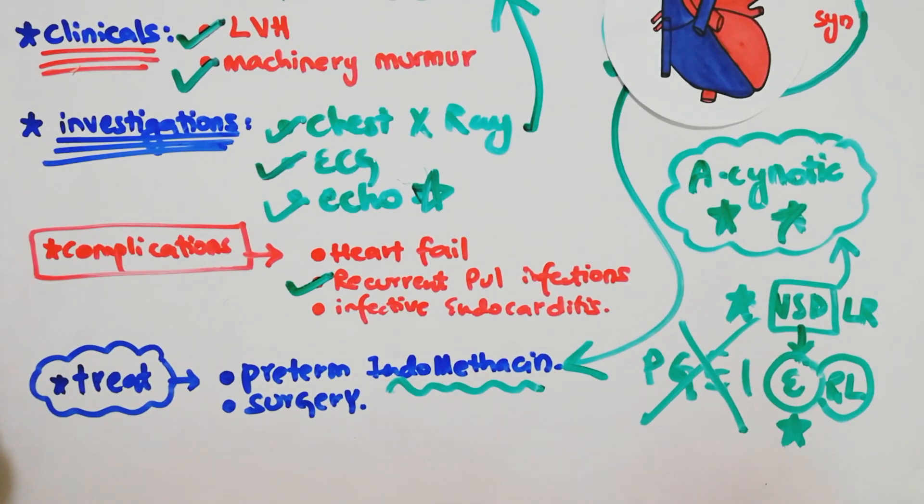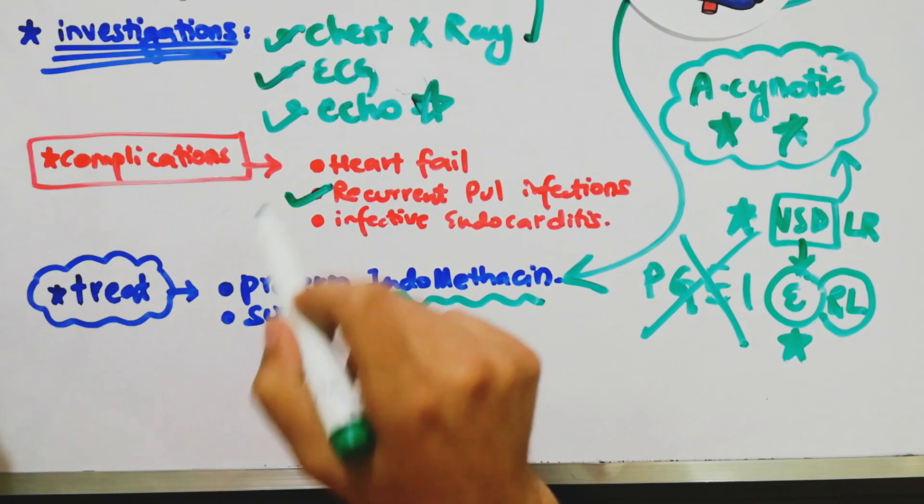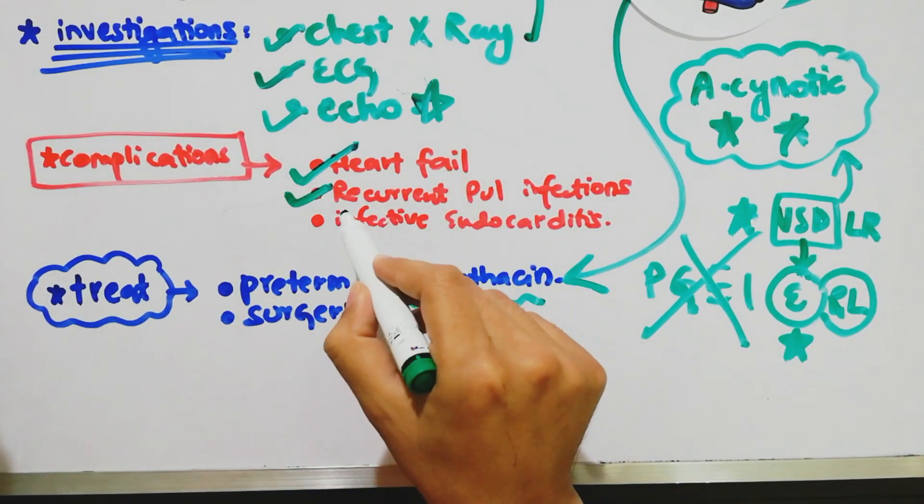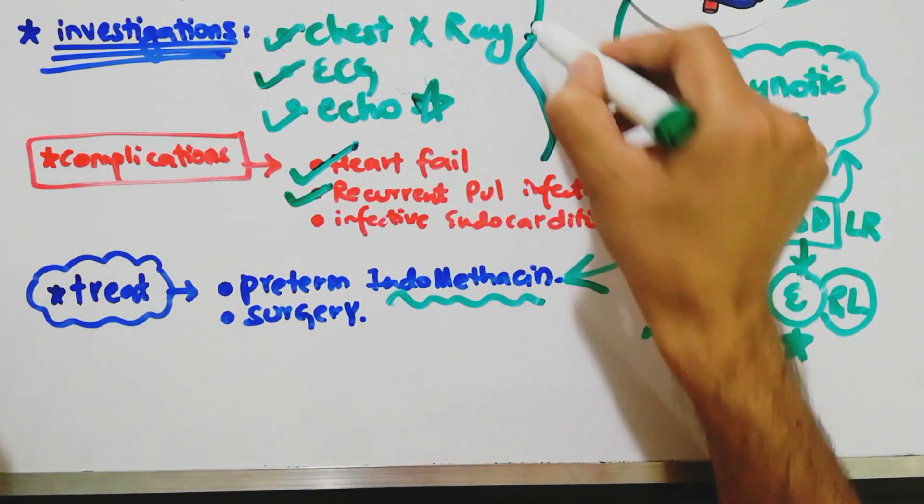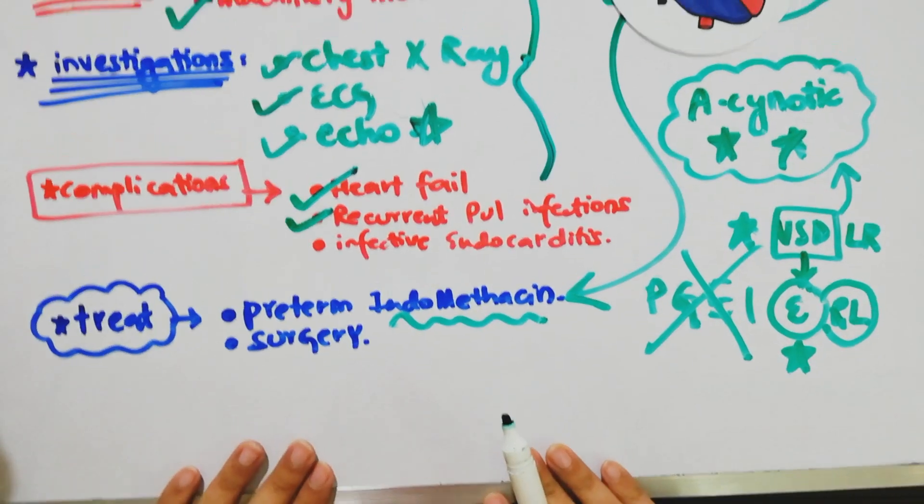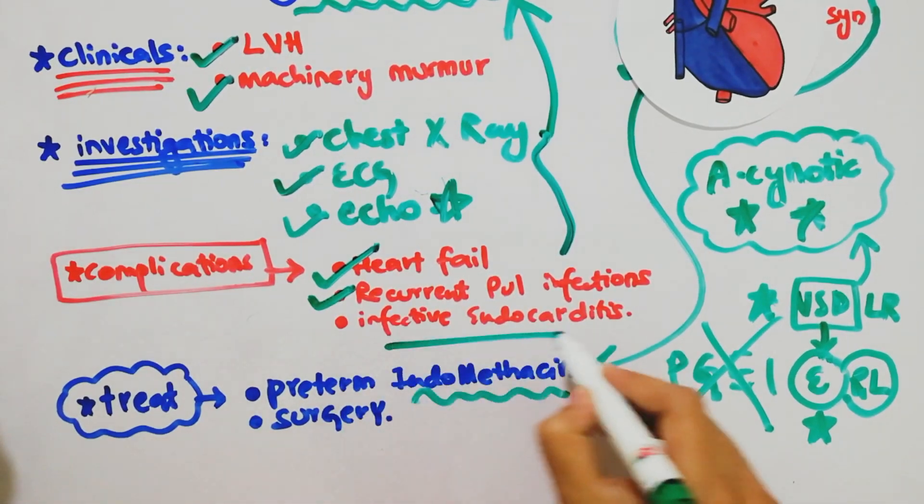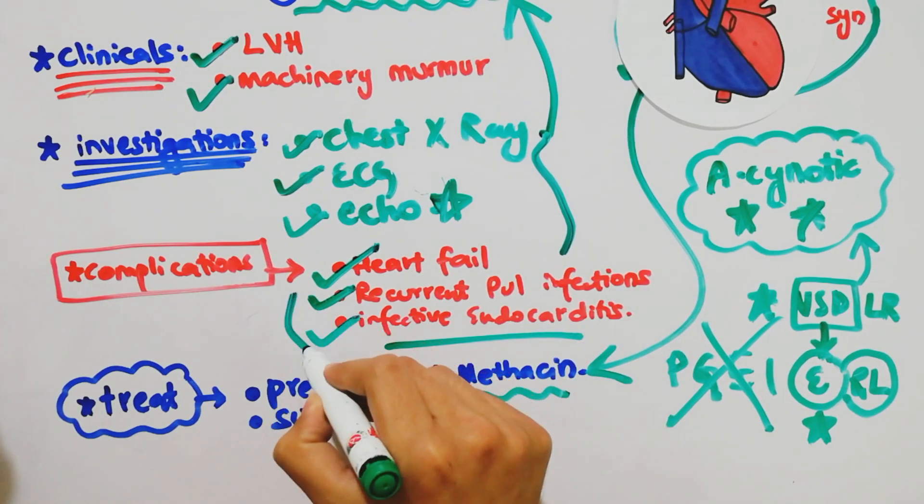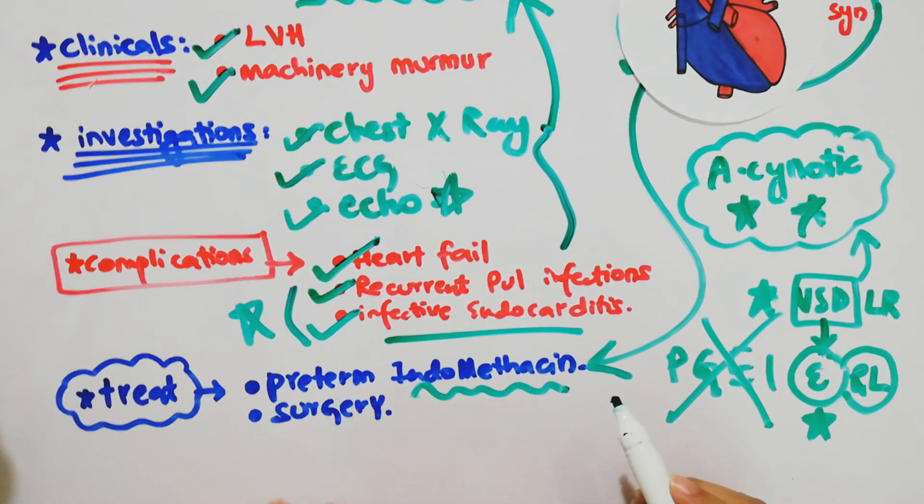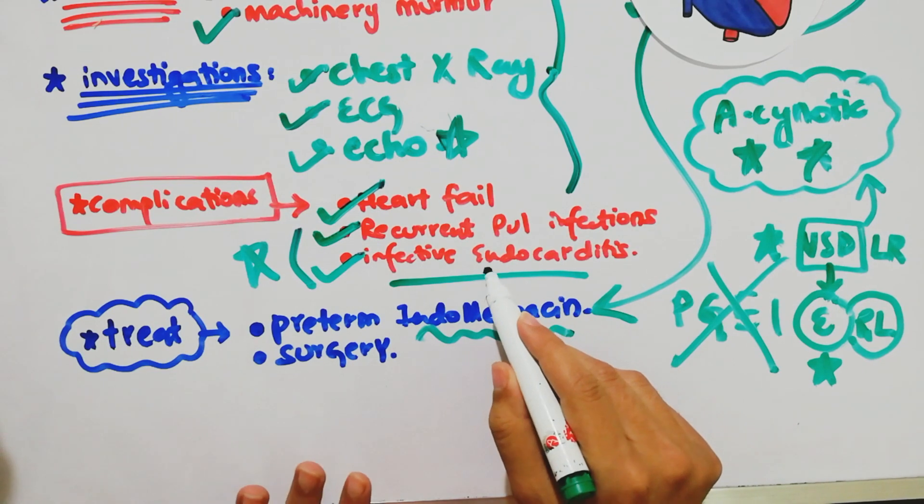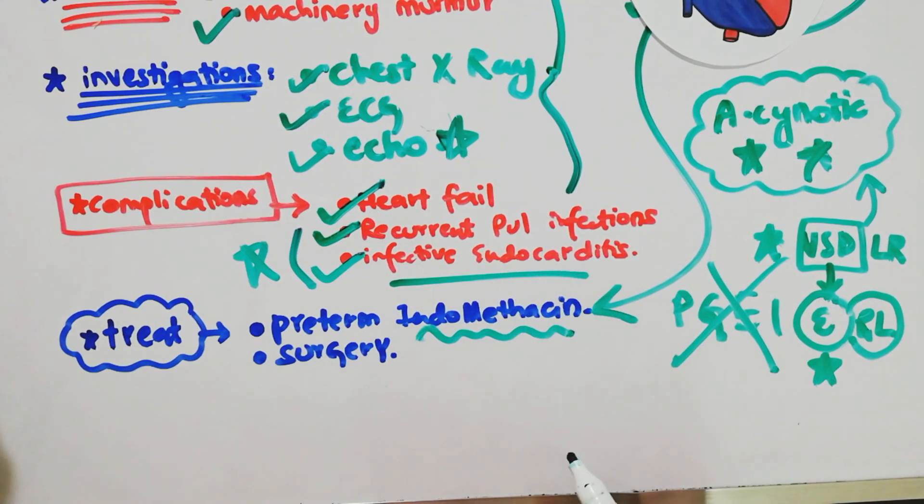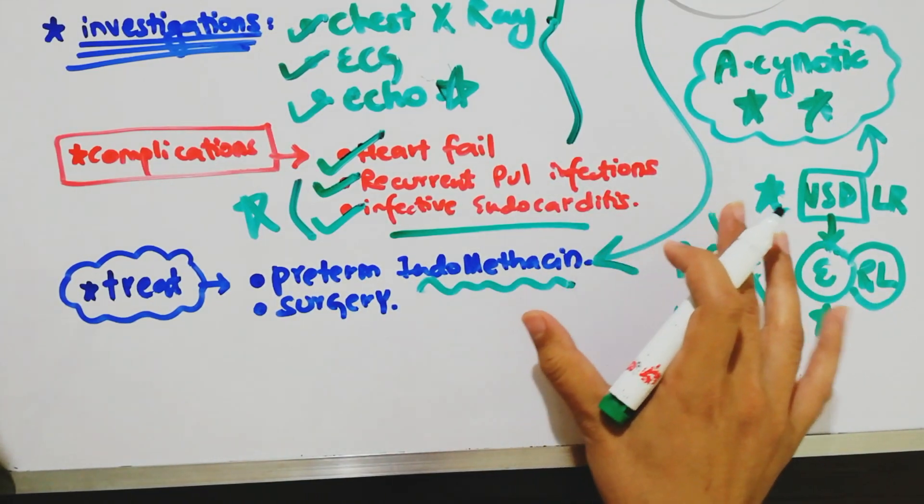Complications include heart failure and recurrent pulmonary infections due to increased pulmonary flow. There's also risk of infective endocarditis due to turbulent blood flow.